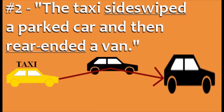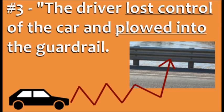Number two: The taxi side-swiped a parked car and then rear-ended a van. Side-swiped means the taxi hit the side of the parked car while passing it. Rear-ended means the taxi hit the back of the van. Number three: The driver lost control of the car and plowed into the guardrail. Inexperienced drivers can lose control of the car, especially when driving at high speeds, at night, or in bad weather. The phrasal verb plowed into is an alternative way to say crashed into.